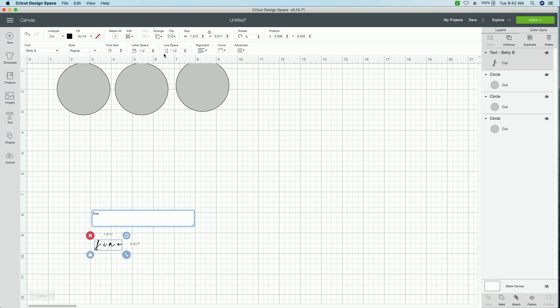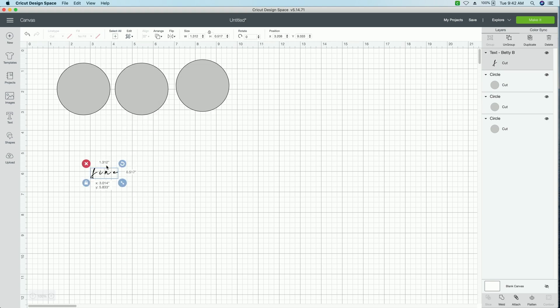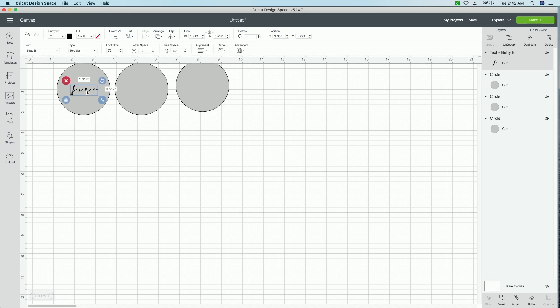I'm going to type in fine, and this will be a representation of our fine tip. I'm not going to worry about kerning or anything here. Generally, I will say definitely kern your script fonts. That way they look really good. So decrease the letter spacing. But since this just is for demonstration purposes, I won't go through all of that. So we do have fine here. And again, like I said, we are using a Makers Gonna Learn font. It is our Betty B font. It's a super thin, fine font that looks really great with foil transfer.